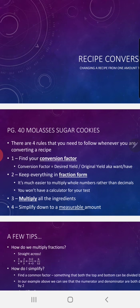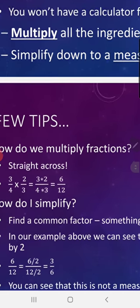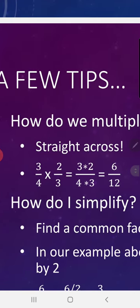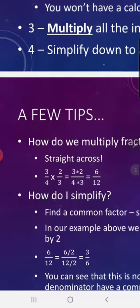A few things to review: how do we multiply fractions? We go straight across. In this example, 3/4 times 2/3 — you take 3 times 2 over 4 times 3. That equals 6/12.